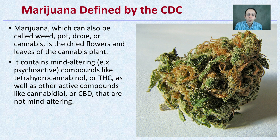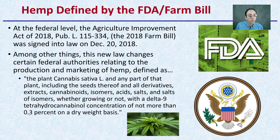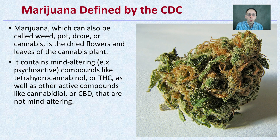Lastly, how do we define marijuana? It can be called weed, pot, dope, or cannabis, and usually refers to the dried flowers and leaves of the cannabis plant. It contains mind-altering psychoactive compounds like THC, as well as other active compounds such as cannabidiol (CBD), which are non-mind-altering. What defines it as truly marijuana goes back to the 2018 Farm Bill: marijuana is defined as having greater than 0.3% THC on a dry weight basis. As soon as that plant or flower goes above that threshold, it crosses the divide from what we define as hemp to what we refer to as marijuana. It's important to make that distinction, and hopefully you were able to learn something in this video.